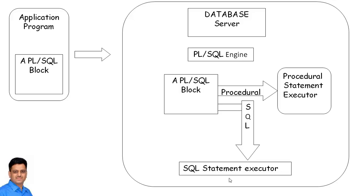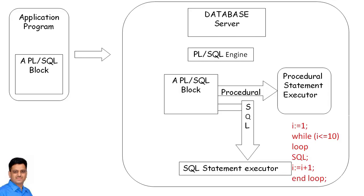Let's understand this architecture with some sample code. Here we have an IF statement — we check the value of A and B, and based on this condition it decides whether to execute SQL1 or SQL2. The checking of the condition — whether A is greater than B — is performed by the procedural statement executor. If the condition is true, it sends SQL statement 1 to the SQL statement executor; if false, it sends SQL statement 2.